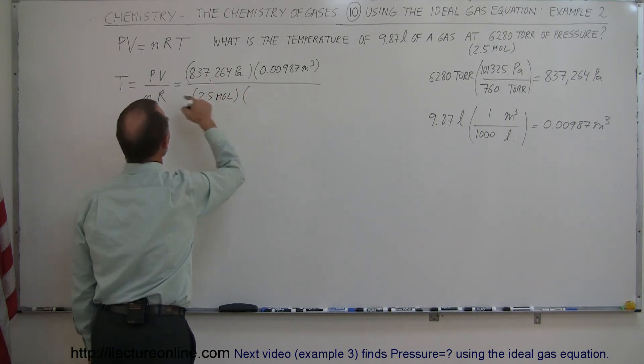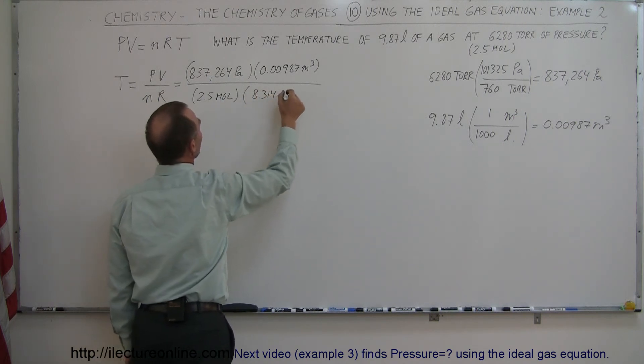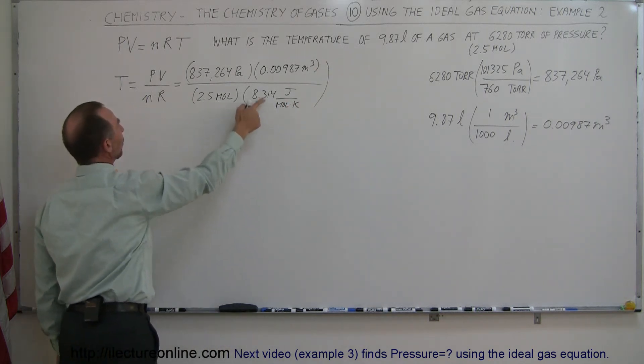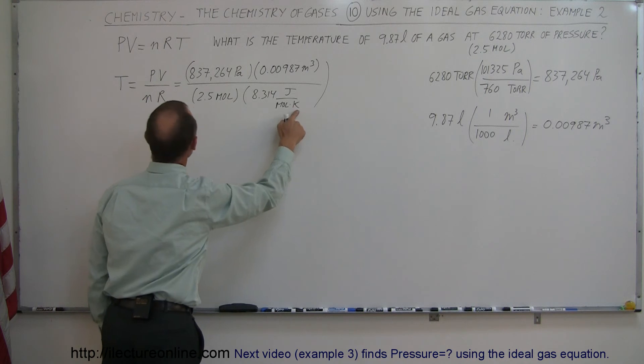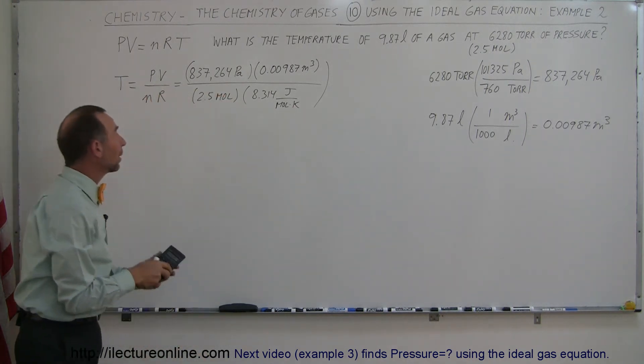And finally, we have the gas constant, which is 8.314. That would be joules per mole times Kelvin, and notice that everything will then get canceled out except for Kelvin. Kelvin will be the surviving variable here. And now with a calculator, let's figure this out.